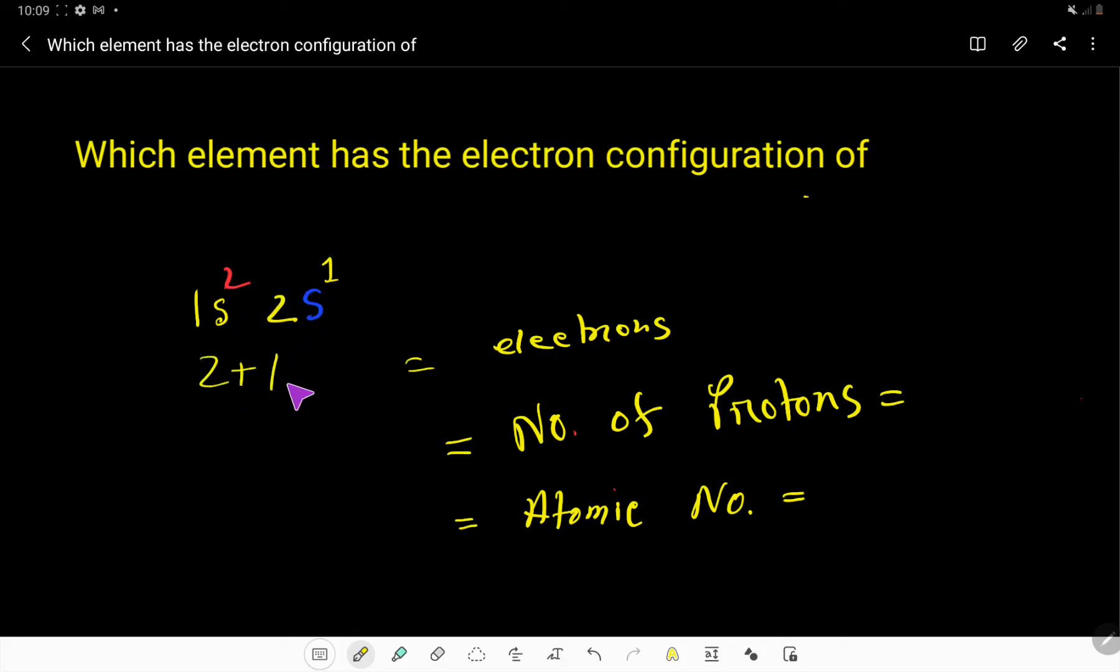Here we have two electrons and here we have one electron, so basically 2+1, that is three electrons. We know that in a neutral element, the number of electrons is equal to the number of protons, so here the number of protons will be three.